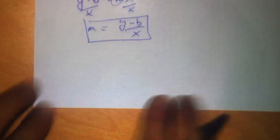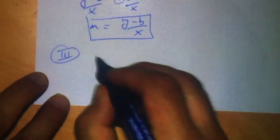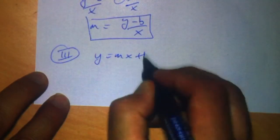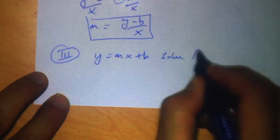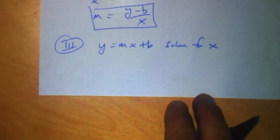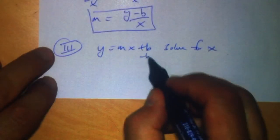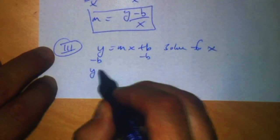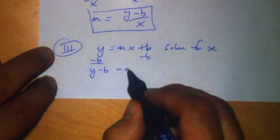The third case is: one, two, three, y equals mx plus b, and we're going to solve for x. And it's very similar to what we just did. We go ahead and subtract b on both sides. We get y minus b on this side equals mx.